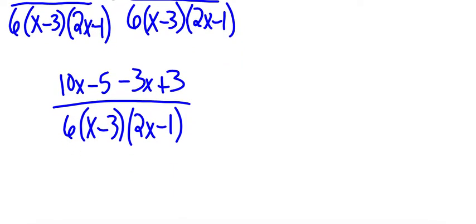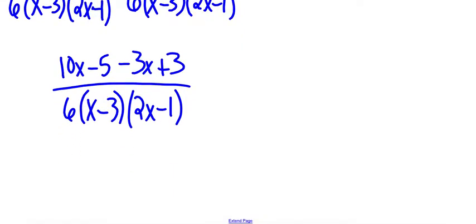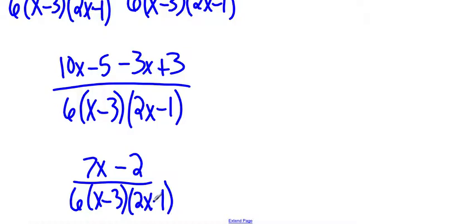Now we're going to combine like terms there. So 10x minus 3x is 7x, negative 5 and positive 3 is minus 2. The denominator stays the same. Now sometimes it's possible that once you've simplified everything in the numerator, you may be able to refactor the numerator and cancel some stuff out. In this case, 7x minus 2, we can't factor that. The bottom's already factored. Nothing's canceling out of this, so you're done. This is your answer.